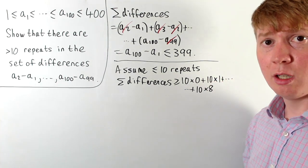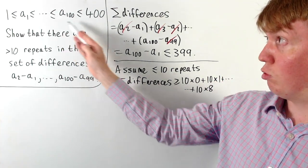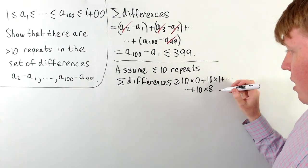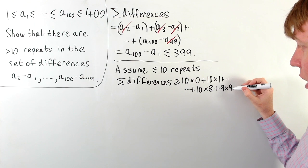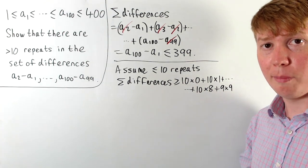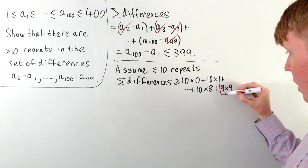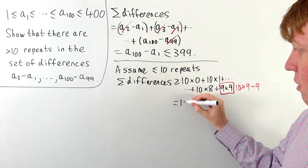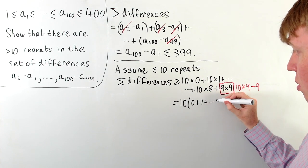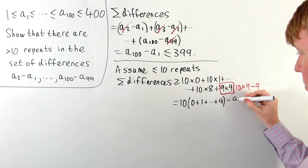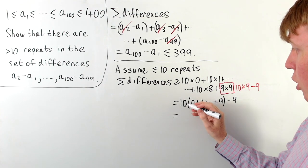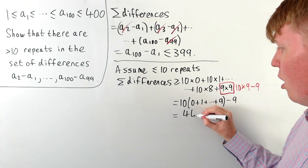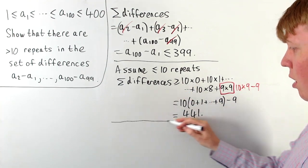At this point we've covered 90 differences, and since there are 100 numbers in total there are only 99 differences. So we need just 9 lots of 9 to complete the lower bound. Writing 9 times 9 as 10 times 9 minus 9, we get 10 times the sum of integers up to 9 — which is 45 — giving 450 minus 9, so our lower bound on the sum of differences is 441.